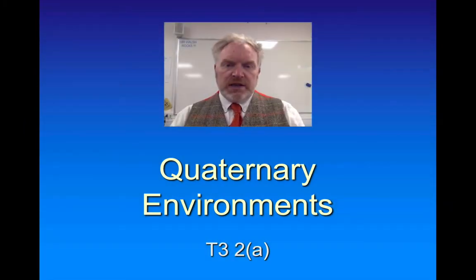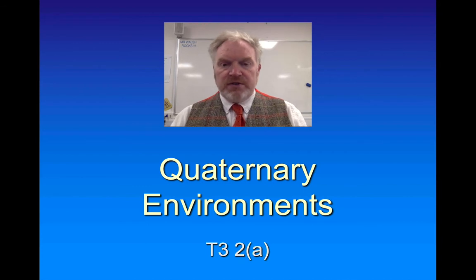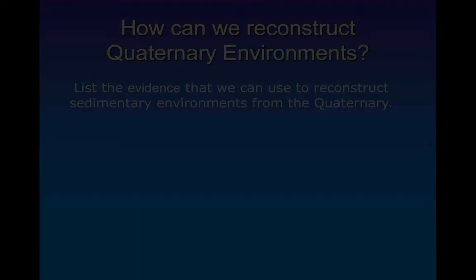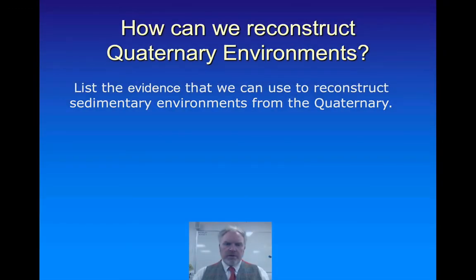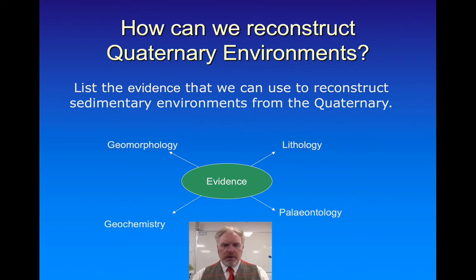What we're doing in this lesson is talking about how the different environments that have existed through the Quaternary period have created a series of distinctive landforms and deposits that indicate what those climates and environments would have been like. The evidence we can use to try to reconstruct these different climatically controlled environments from the Quaternary includes evidence from the landscape, from geomorphology, and from the lithology of the sediments we find.